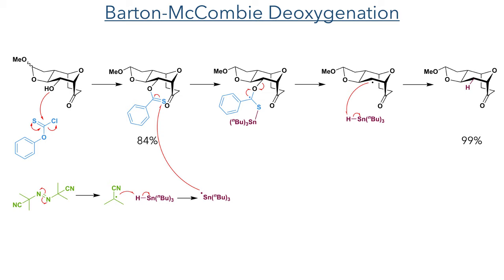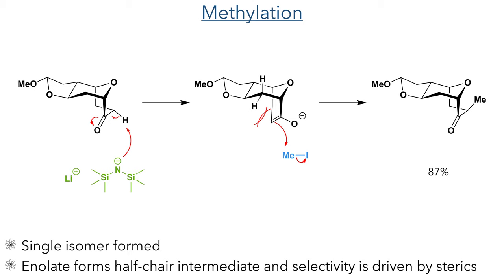The next reaction carried out was the methylation of the alpha position of the carbonyl. Deprotonation with lithium-HMDS formed an enolate which takes up a half-chair conformation. In this conformation, methyl iodide adds to the less sterically hindered side of the ring to produce the product as a single isomer in an 87% yield.